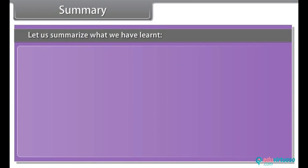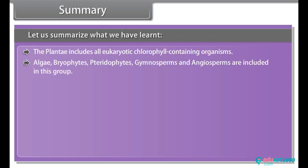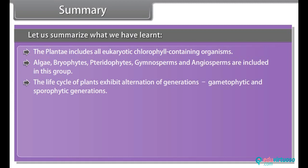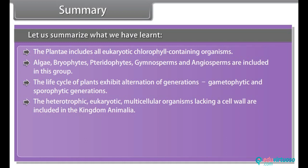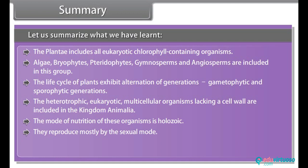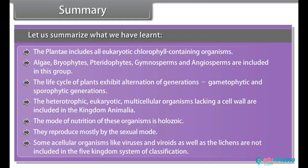Let us summarize what we have learnt. Plantae includes all eukaryotic chlorophyll-containing organisms — algae, bryophytes, pteridophytes, gymnosperms and angiosperms. The life cycle of plants exhibits alternation of generations: gametophytic and sporophytic generations. The heterotrophic eukaryotic multicellular organisms lacking a cell wall are included in kingdom Animalia. Their mode of nutrition is holozoic and they reproduce mostly by the sexual mode. Some acellular organisms like viruses and viroids, as well as lichens, are not included in the five kingdom system of classification.